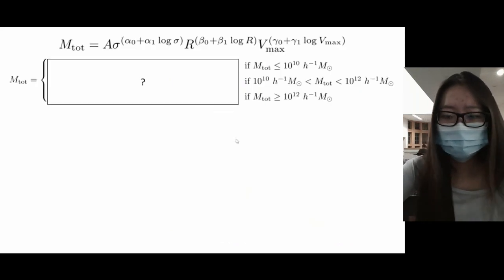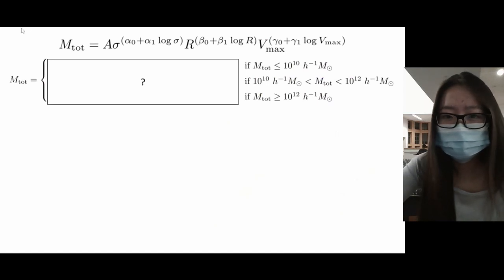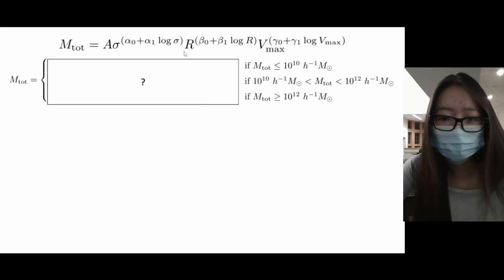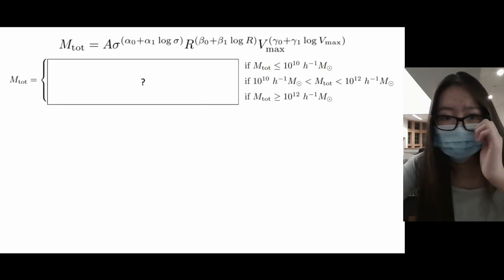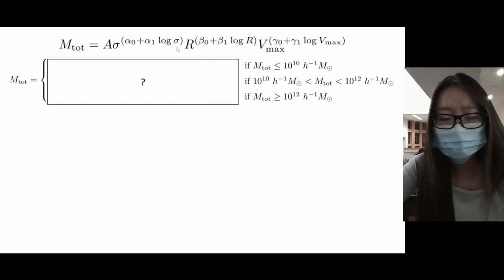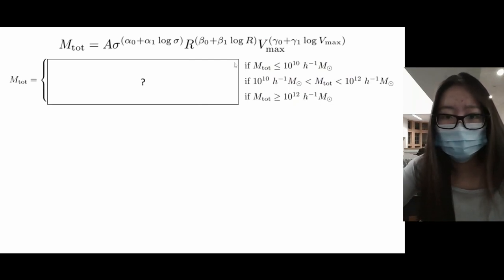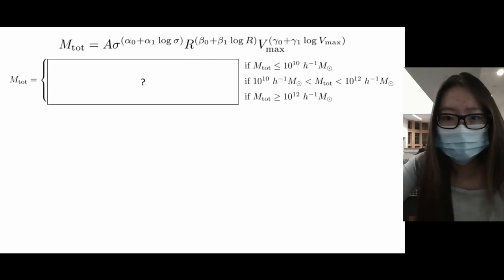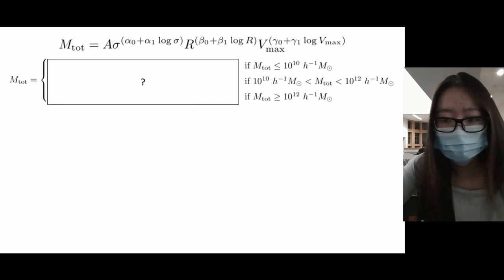We tried a different approach: using linear regression to fit a relation of a more complex form, including a running index because we found the exponents have some implicit dependence on mass. We also added Vmax in addition to radius and sigma because Vmax is especially important for predicting subhalo total mass in the low-mass end. We fit this equation to three different mass ranges: subhalos with masses less than 10¹⁰, the intermediate regime from 10¹⁰ to 10¹², and the most massive regime for masses greater than 10¹².